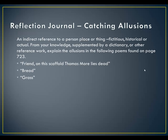For our reflection journal this week, we're going to be thinking about another really important part of understanding poetry: allusions. Allusions are any indirect reference to a person, place, or thing in a poem, and that can be fictitious, historical, or actual. I'd like you to think about these poems using your own knowledge, supplemented by a dictionary or other reference work. You can look these up using our library's reference databases, google them, come into the library, or use your own personal experience to think them through. Please look at the three poems on page 723.